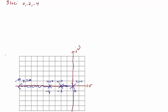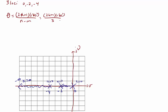Now let's find the angle for the asymptotes. Theta is equal to 2k plus 1 times 180 degrees over alpha. Remember alpha is equal to n minus m, so that's 2k plus 1 times 180 degrees divided by 3, because we have 3 poles and no zeros. So our angles are 60 degrees, 180 degrees, and 300 degrees, similar to the first example we did in the last lecture.